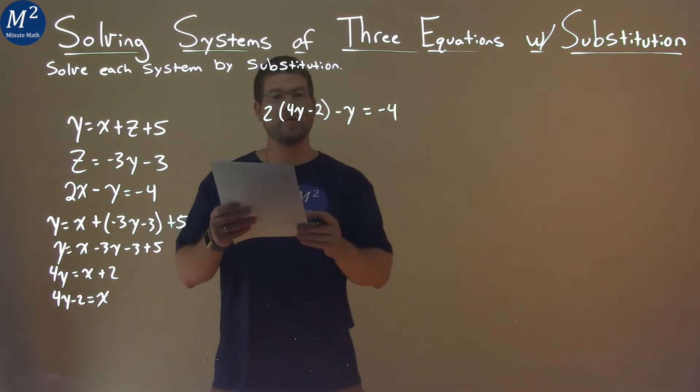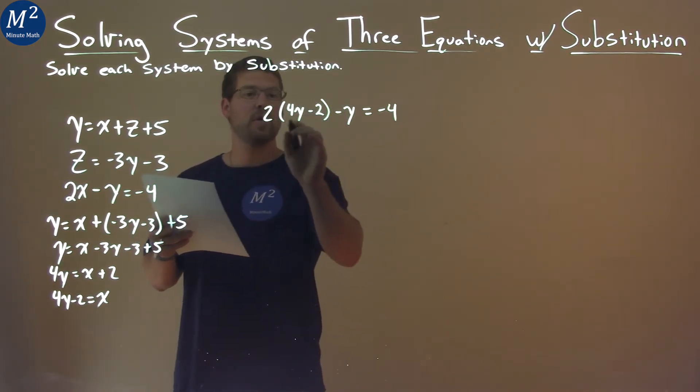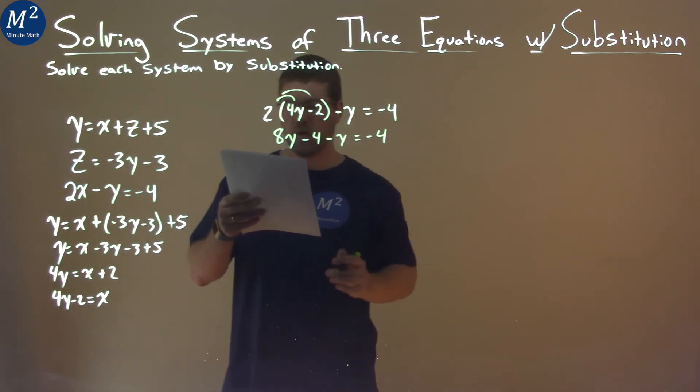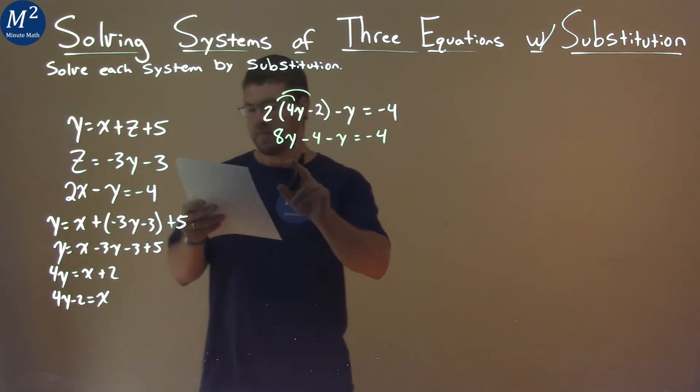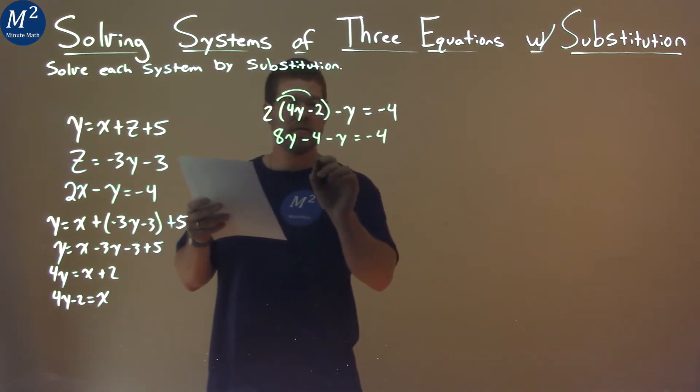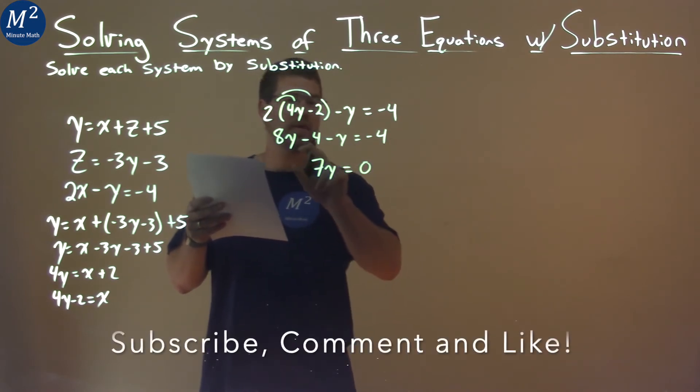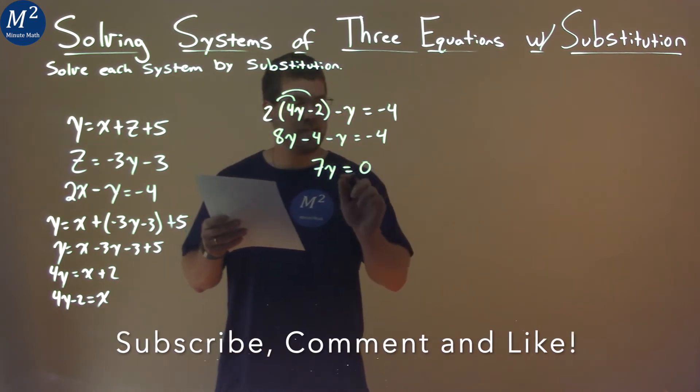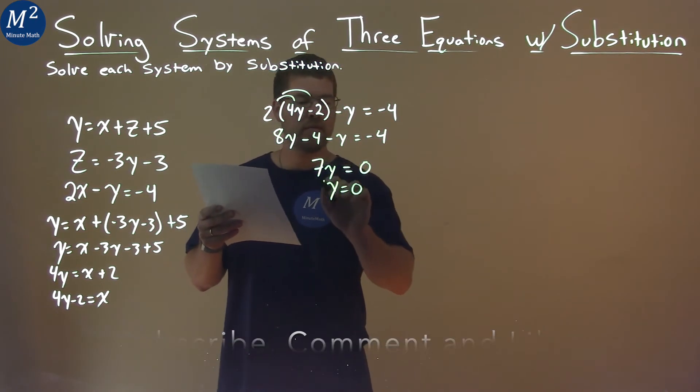Now I want to solve for y. Distribute the 2 to both parts, and we have 8y minus 4 minus y equals negative 4. Combine our like terms: 8y minus y is 7y. Add 4 to both sides, and that equals 0. Divide both sides by 7, and y equals 0. That's always nice.